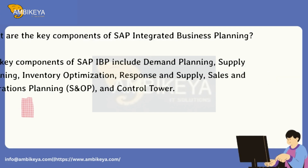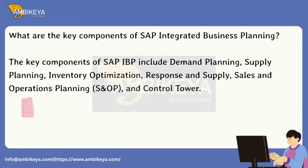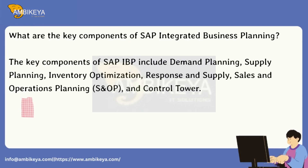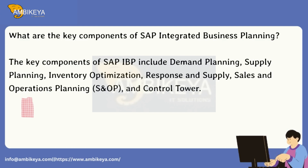What are the key components of SAP Integrated Business Planning? The key components of SAP IBP include demand planning, supply planning, inventory optimization, response and supply, sales and operations planning (S&OP), and control tower.